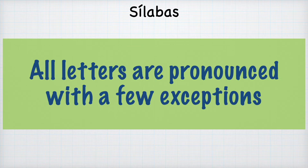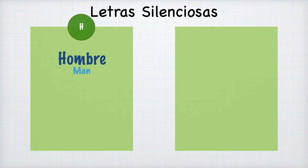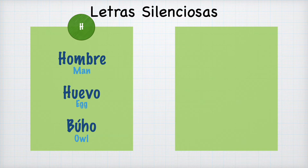In Spanish, all letters are pronounced with a few exceptions. The silent letter in Spanish is the letter H. For example: hombre, huevo, búho. The H doesn't make a sound — it's just the vowel sound.